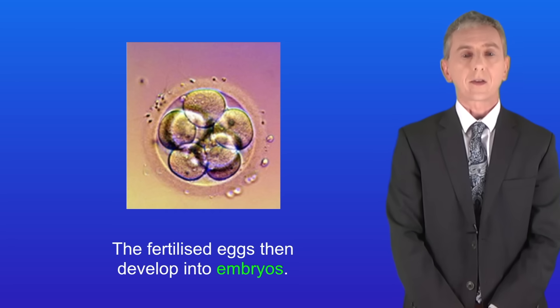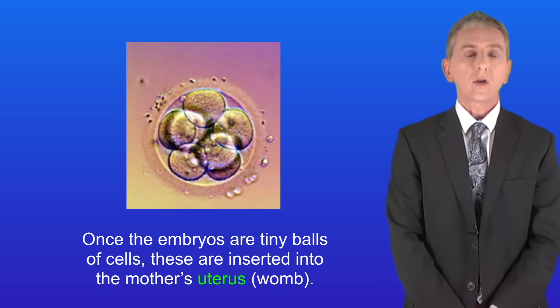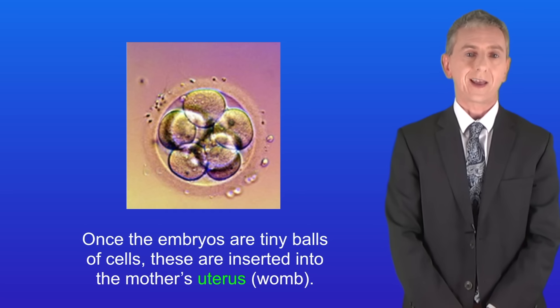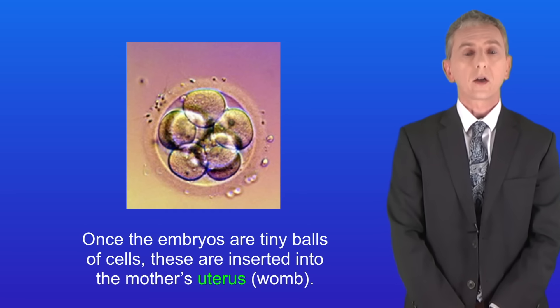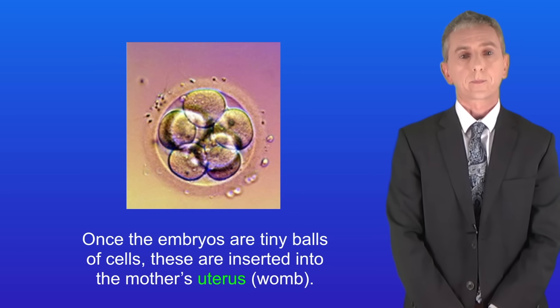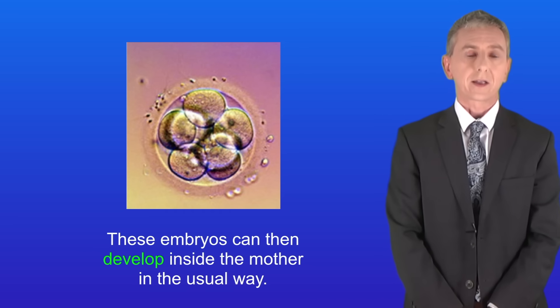The fertilized eggs then develop into embryos. Once the embryos are tiny balls of cells, they are inserted into the mother's uterus — in other words, the womb. These embryos can then develop inside the mother in the usual way.